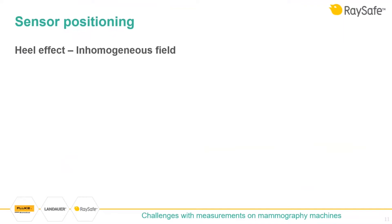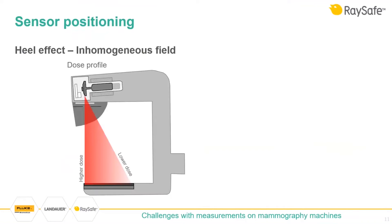Regarding the heel effect and inhomogeneous fields: the built-in heel effect of an X-ray tube is used to maximum advantage in mammography. The dose is highest at the chest wall side and can be 25% lower on the other side. The benefit is to compensate for the breast being thicker close to the chest wall. The challenge for measurement is that the exact positioning of the instrument becomes very important in order to compare data and know what is being measured.